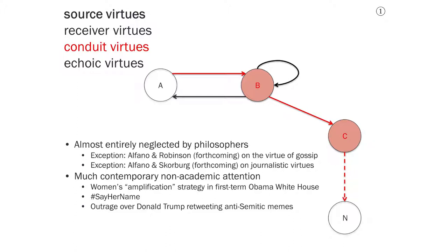Another example of non-academic attention to conduit virtues is the say-her-name hashtag, which was started by Kimberly Crenshaw very recently in response to the Black Lives Matter movement. She doesn't disagree with the Black Lives Matter movement, but she found that they paid disproportionate attention to police violence against black men, and she wanted to raise awareness about police brutality towards black women as well. The say-her-name hashtag insists on not just reporting statistics about women who've been harmed by the police, but individualizing them and humanizing them by insisting on saying their names. Another example of a conduit vice in this case was recent outrage over Donald Trump retweeting anti-Semitic memes that he got from alt-right accounts on Twitter.